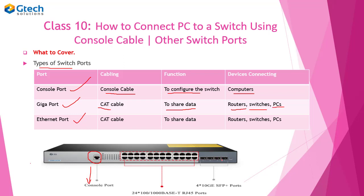In the diagram below, here are the gigabit Ethernet ports. As you can see, on this switch there are four gigabit Ethernet ports. They transfer data at a very high speed, that's why they are called gigabit Ethernet ports.